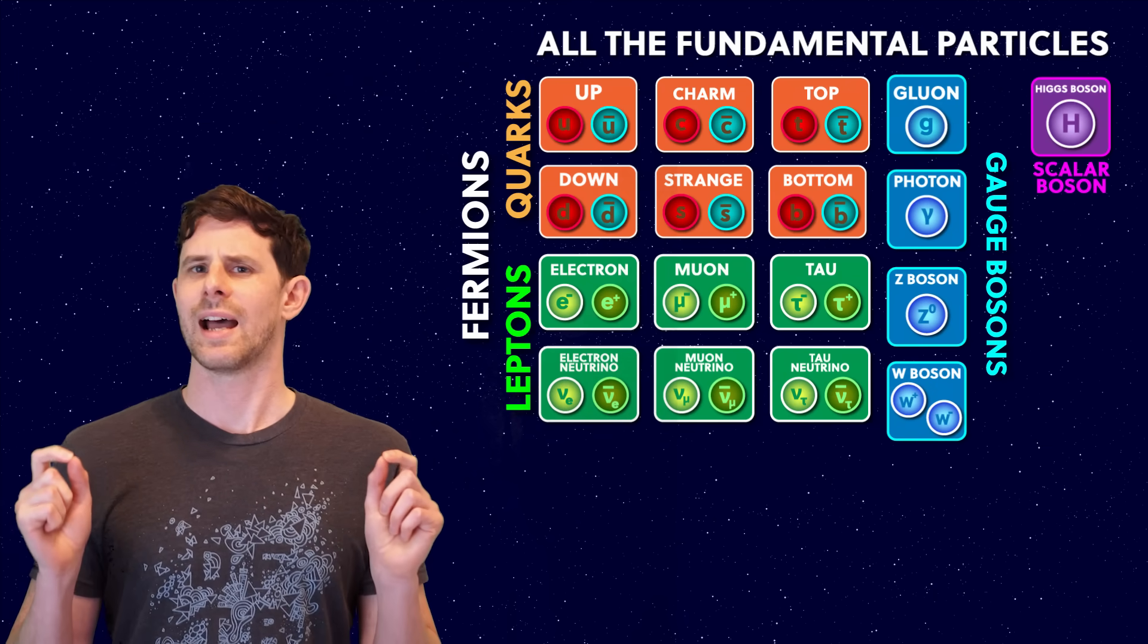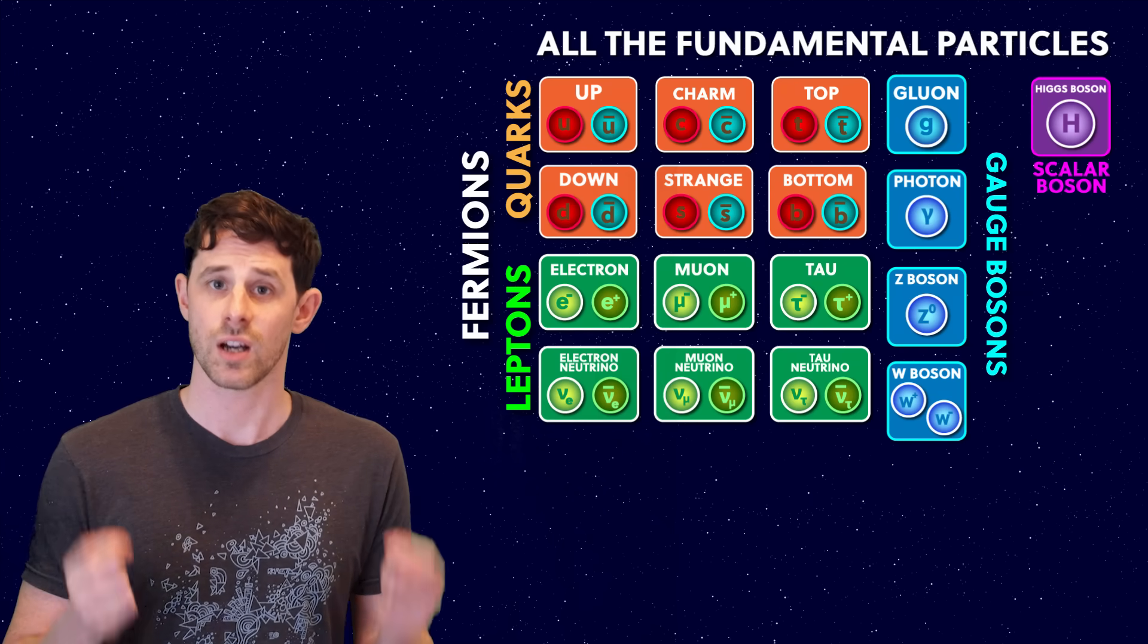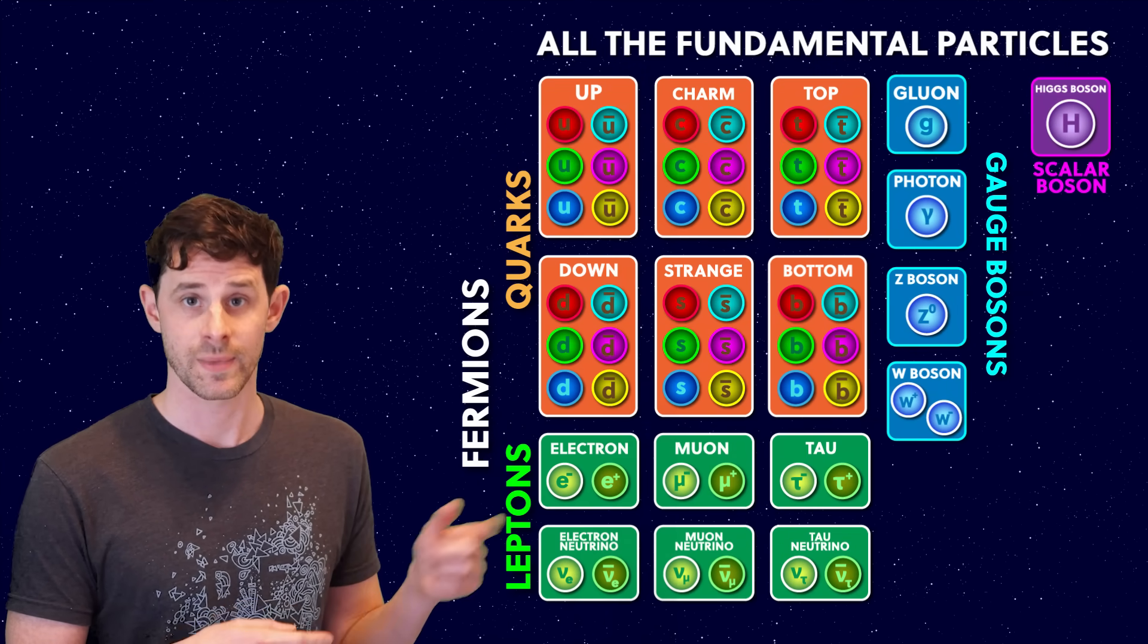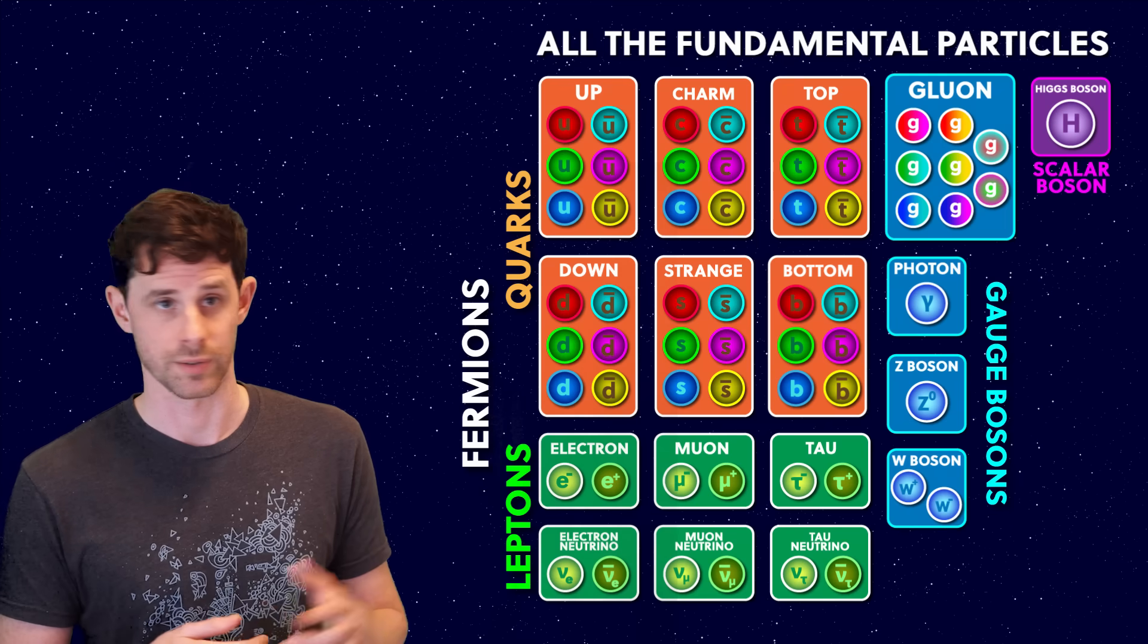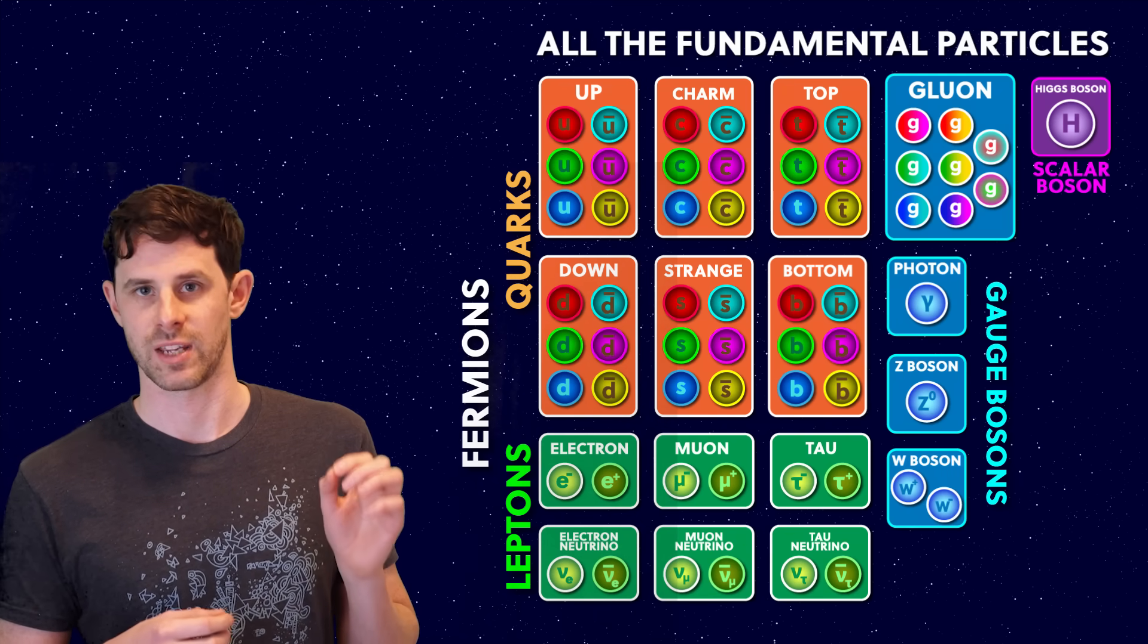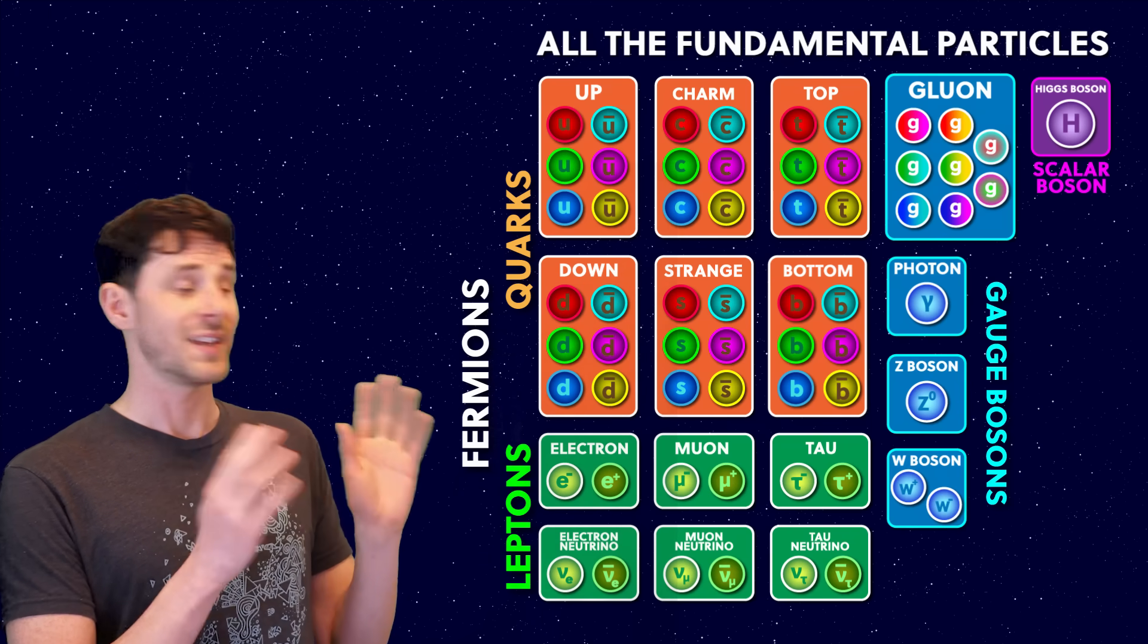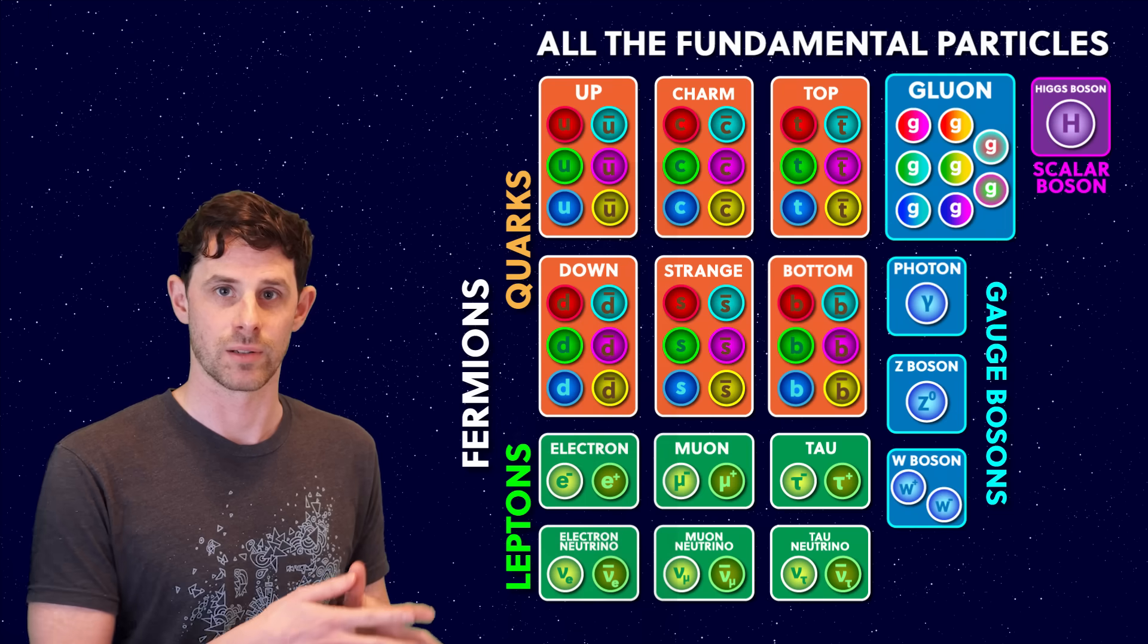And while we're actually drawing all the particles, I may as well draw the different colour charges of the quarks, and there are eight kinds of gluons. These colours aren't real, by the way, just our labelling system for keeping track of the rules of the strong force. So this is actually all of the fundamental particles.